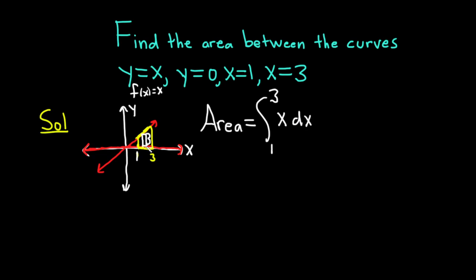And again, no matter where we draw the rectangle, its height is x, and the height varies as x varies from 1 to 3. So this gives us the area.